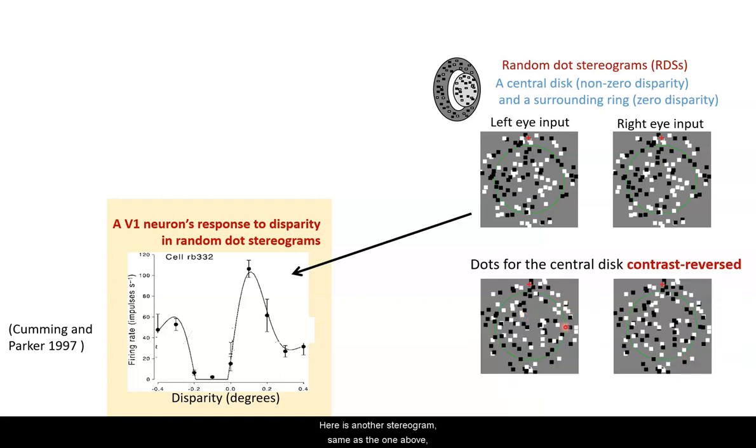Here is another stereogram, same as the one above, except that for the central disk, a black dot for one eye corresponds to a white dot for the other eye and vice versa. Such a stereogram is called anti-correlated or contrast reversed.